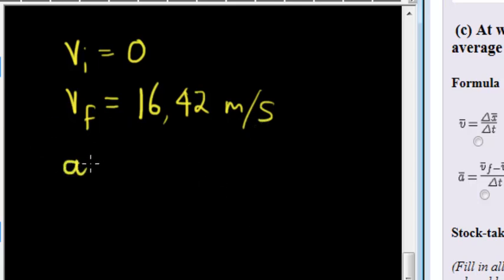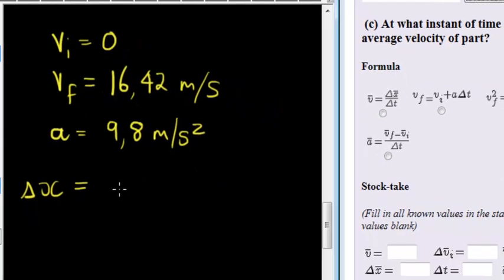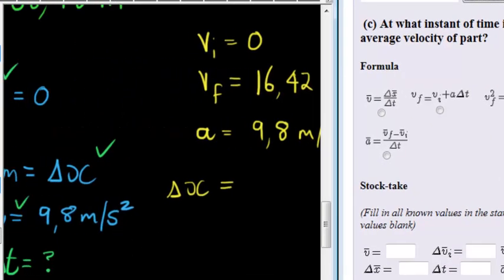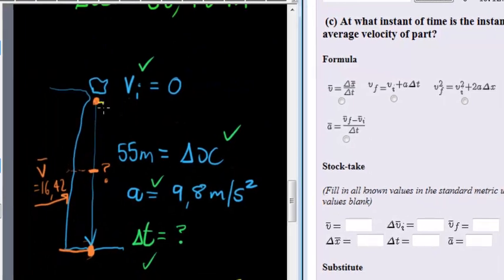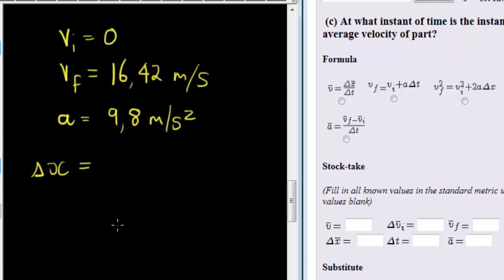Then we have acceleration, as always, 9.8 meters per second squared. And this time we do not have the change in displacement because we don't know how far it is falling to get to this point where it has 16.42 meters per second.